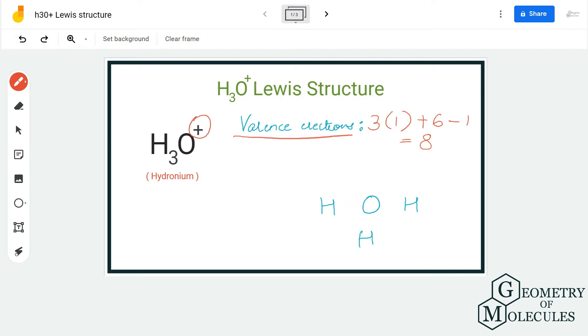Now to show a bond between oxygen and hydrogen atoms, place a pair of electrons between each hydrogen and oxygen atom. Doing that, we will be using up six valence electrons out of eight.